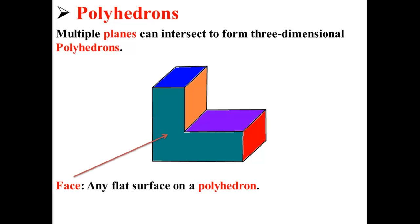On this polyhedron, a face is any flat surface, such as this one the arrow is pointing to.